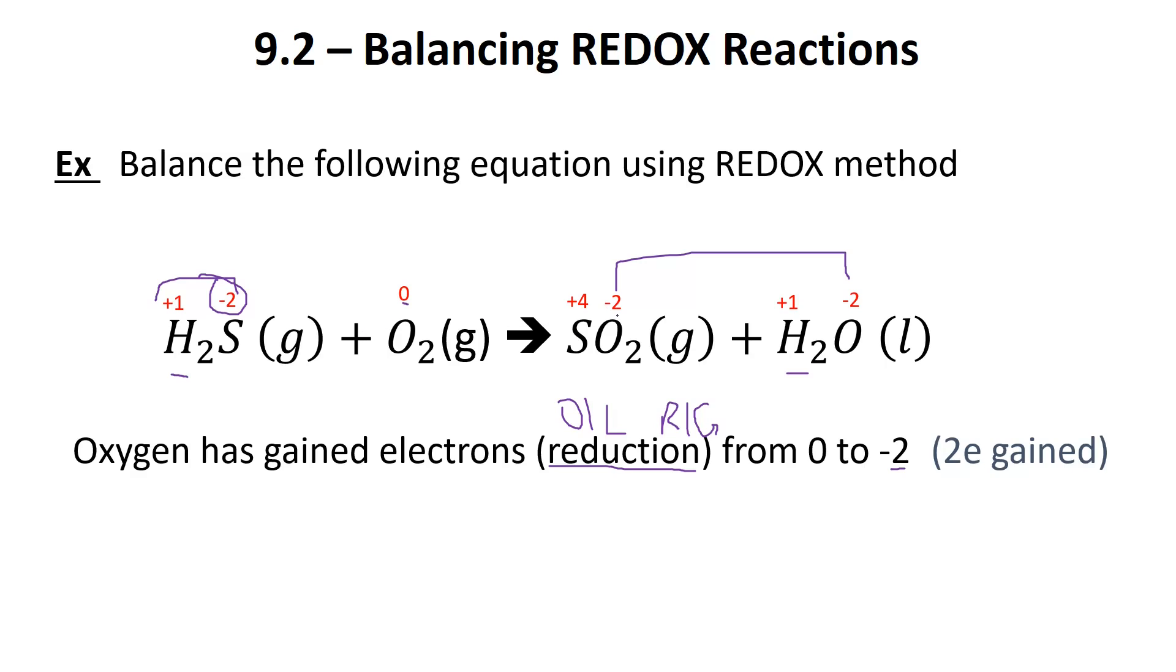Just a quick refresher: if oxygen is -2 and there's two oxygens, that makes it -4. To offset that, sulfur would be +4. What has sulfur done? It has lost electrons. It's gone from -2, now at +4. It's been oxidized. OIL RIG: oxidation is loss. We have a total of six electrons lost here.